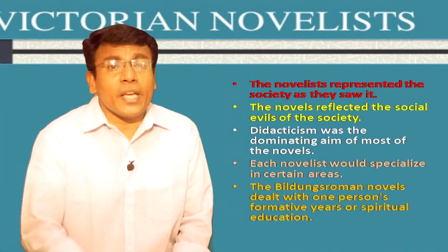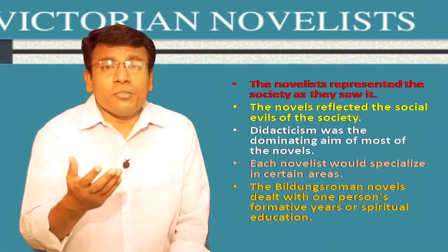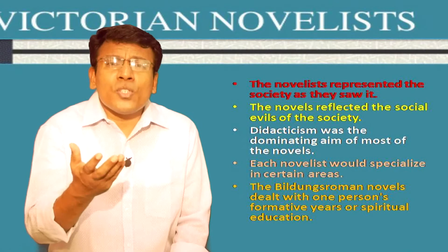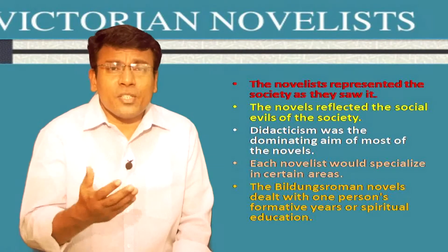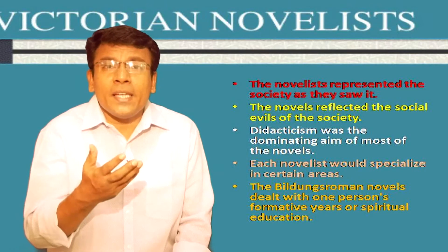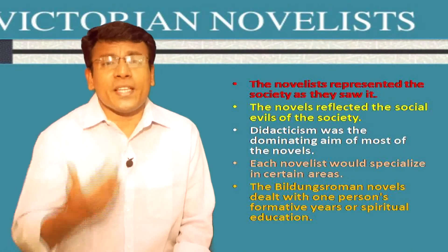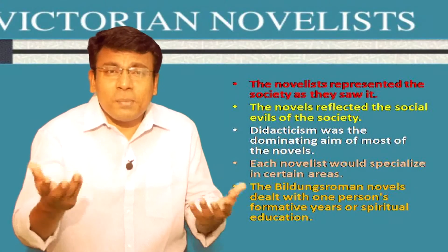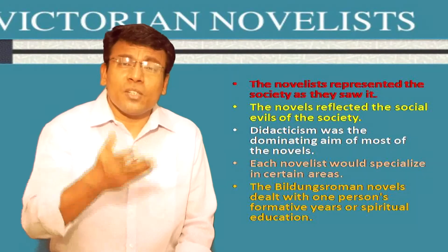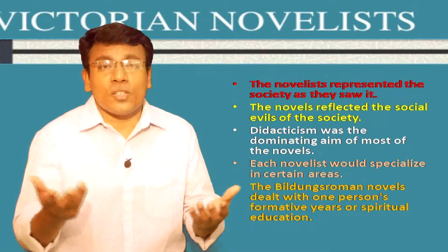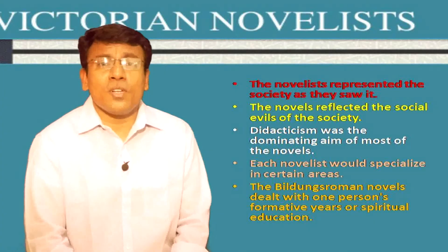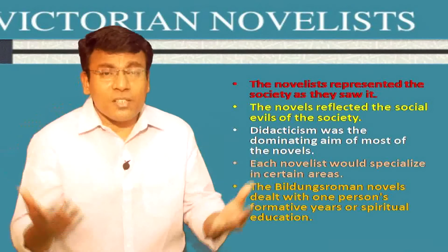Though several authors tried to give a comprehensive, all-inclusive picture of contemporary society, in general the tendency was towards specialization. Each novelist would specialize in certain areas: we see novels of the sea, novels of military life, novels of high life, novels of low life, and novels of industrial life. The novels of this time had some kind of specialization rather than general themes.